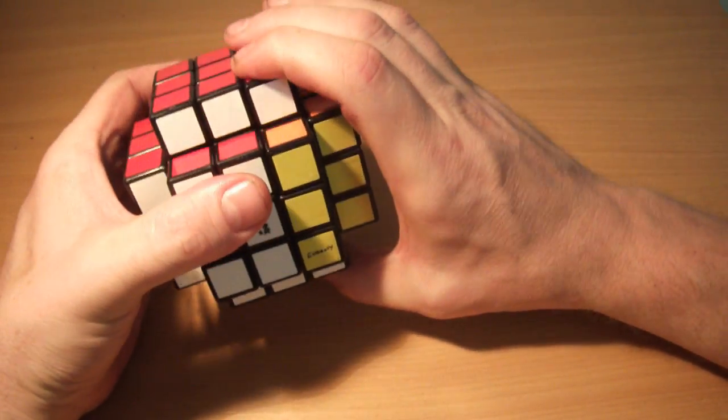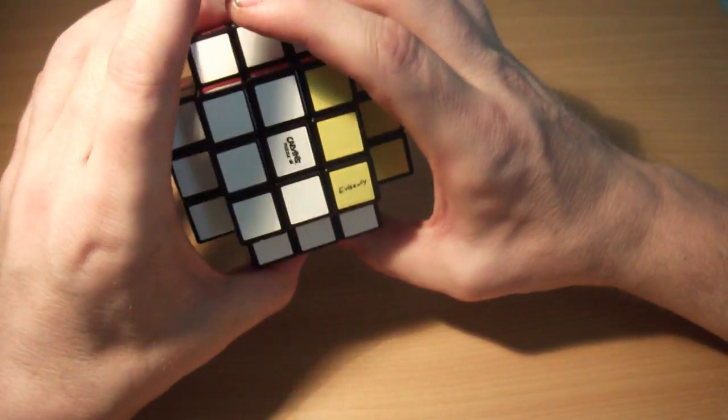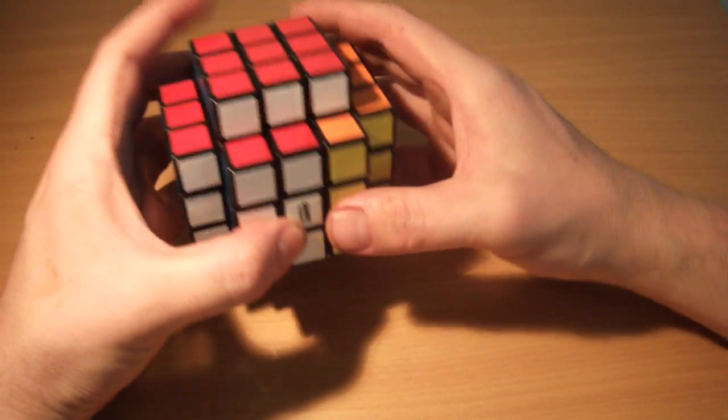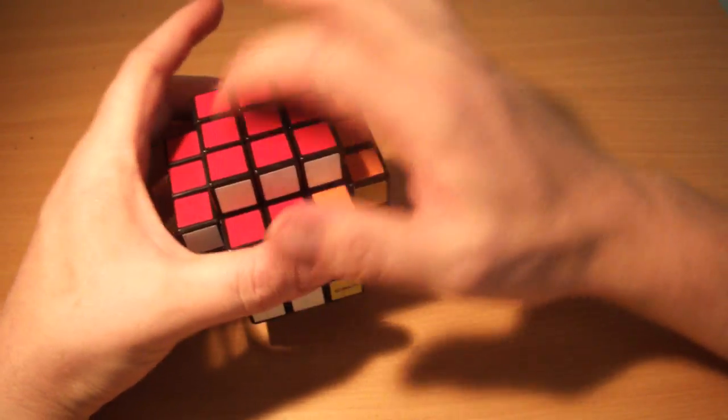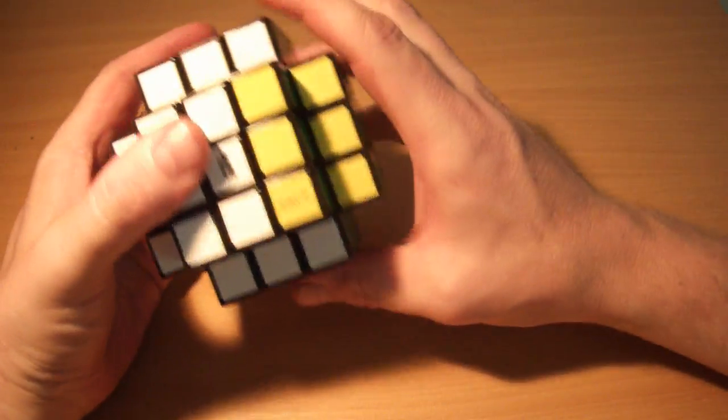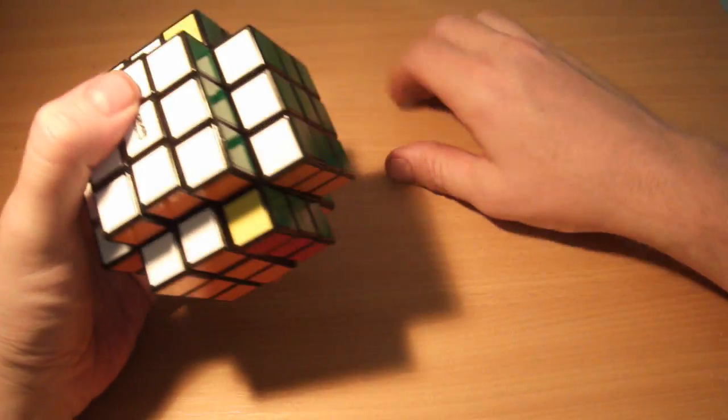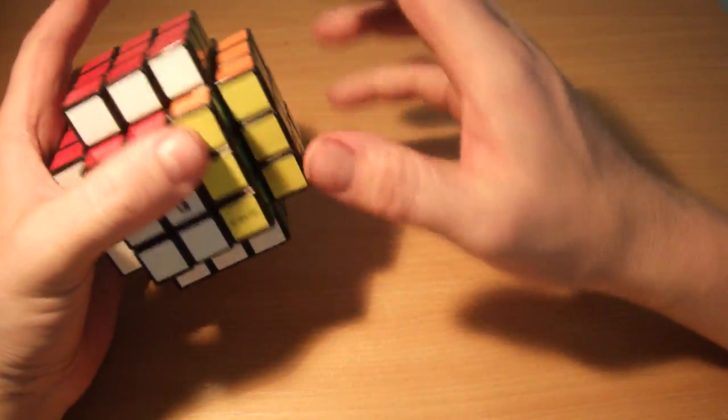You've just done the cuboid algorithms on the final 3x3x5 here to fix the last few edges. And you'll find yourself in this situation where these set of edges here are rotated from their solved position, including this end.